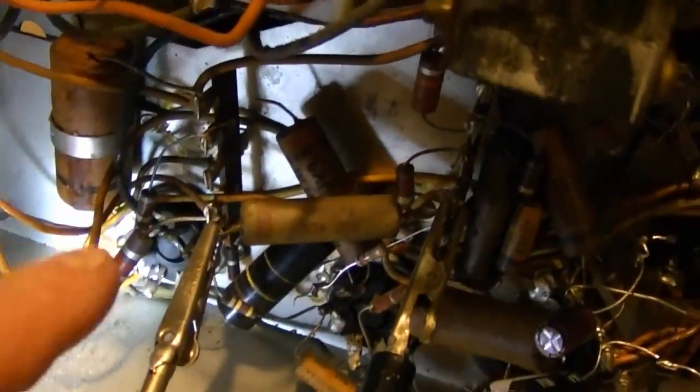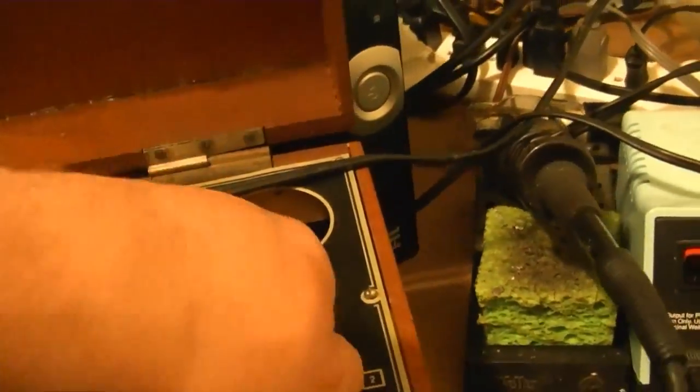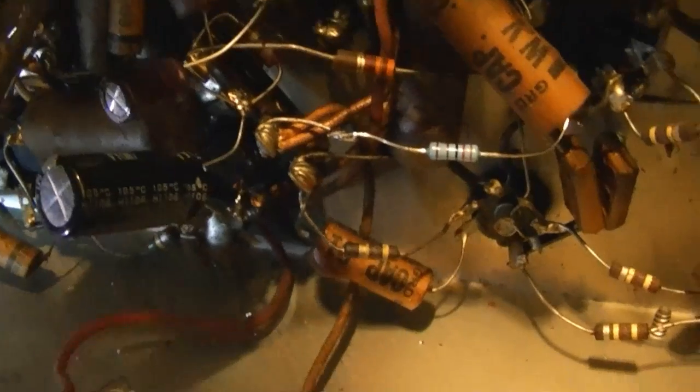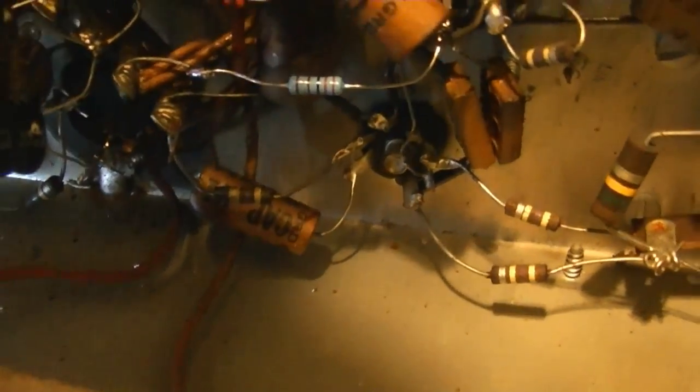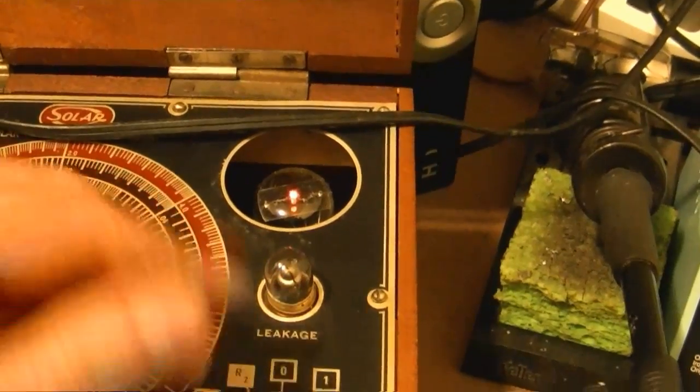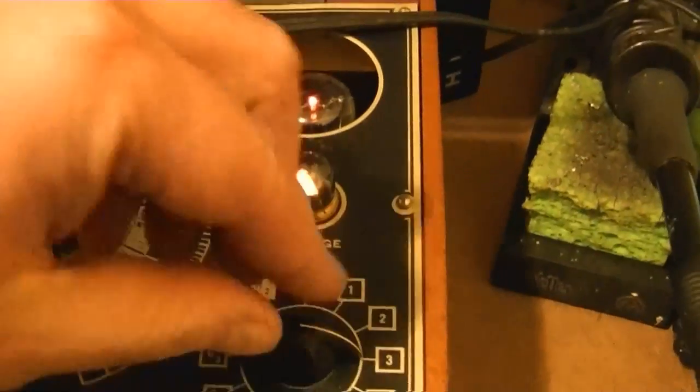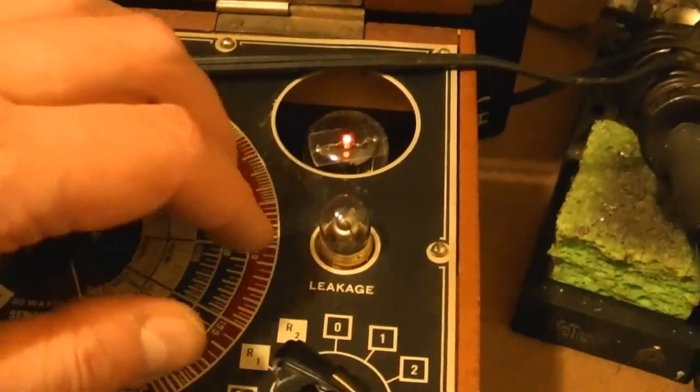I'm checking this cap right now, should be good up to 600 volts. Shocking, we have leakage. Let's try another cap. This one should get 400 volts. Shocking, we have leakage. A lot of leakage on this one. The faster the light flashes, the more leakage you've got.